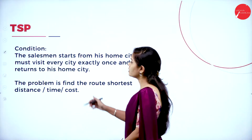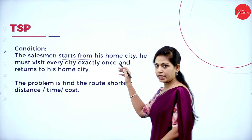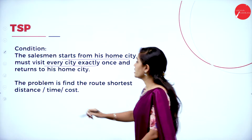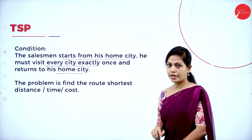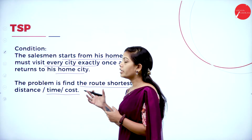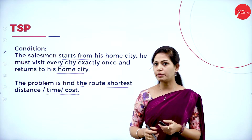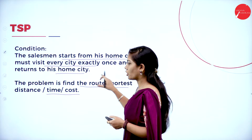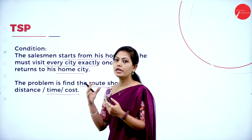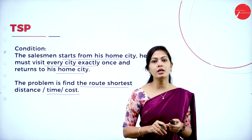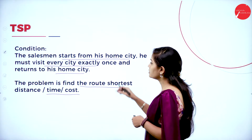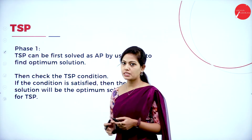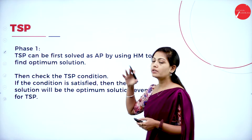The travelling salesman conditions are: the salesman starts from his home city, he must visit every city exactly once, and he returns to his home city. Here we are giving a task to the travelling salesman — by using this method we can find the shortest route, distance, time, or cost, and find the optimal solution. We have two phases in the travelling salesman problem: phase 1 and phase 2.